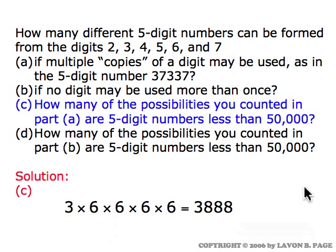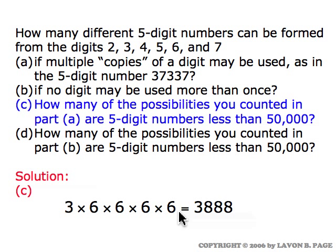In part C, how many of the possibilities from part A would be numbers less than fifty thousand? If we're going to have a five-digit number less than fifty thousand, the first digit has to be a two, three, or four — three choices. The remaining four digits can be any of the six digits since repetition is allowed. So we have three times six times six times six times six, giving three thousand eight hundred and eighty-eight possibilities for a five-digit number satisfying this condition.